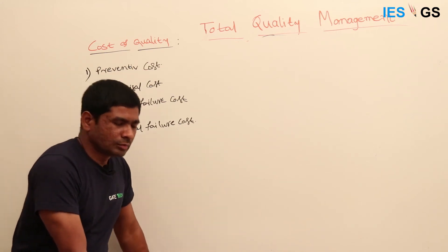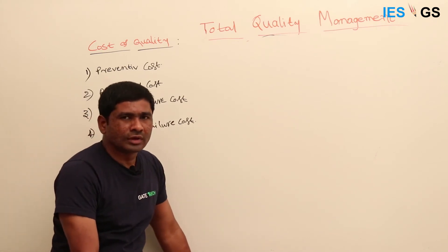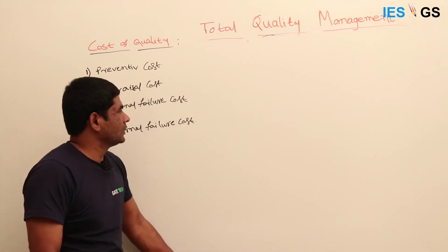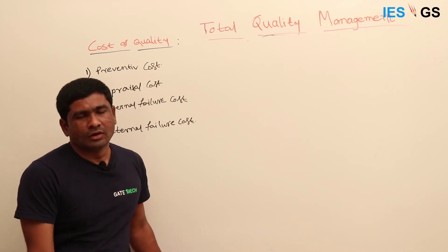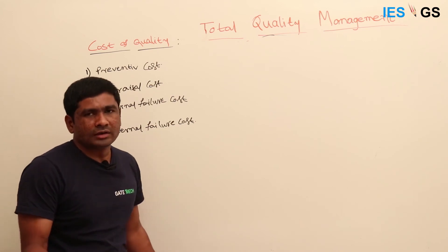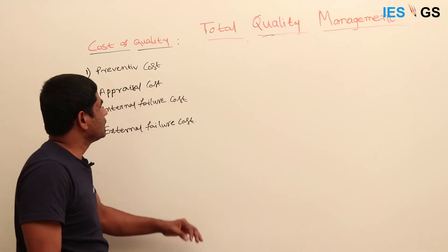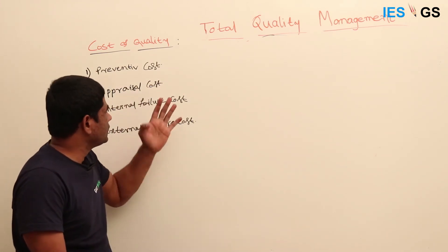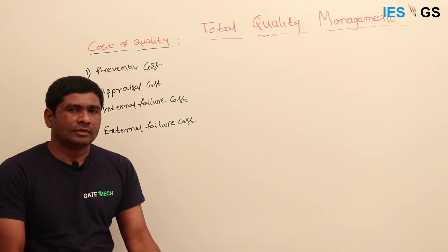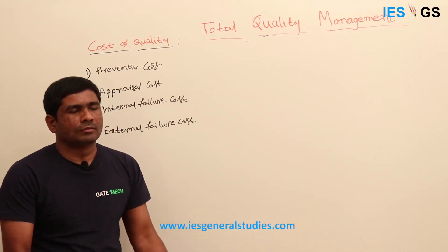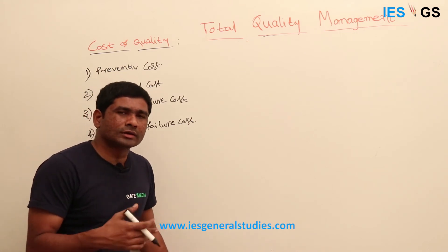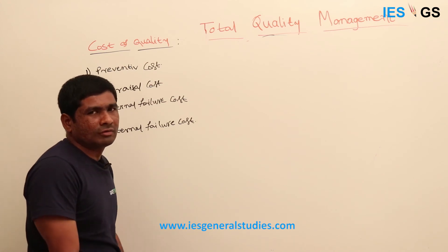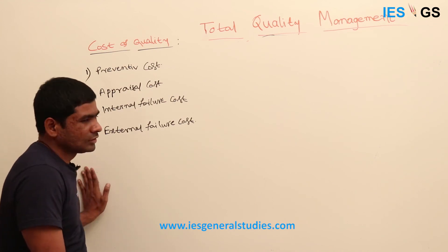Appraisal cost is the cost of inspection carried out before selling the product to the customer — both internal and external inspection. For carrying out this inspection, we spend some money, and that is called appraisal cost. Internal failure cost is when during inspection the product is found to be failing. Because of the failure, we accumulate scrap and waste; the product is wasted, or sometimes we need to repair and rework it — all of which incur extra cost.